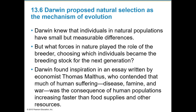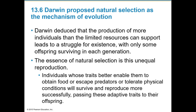Darwin found help in an essay by economist Thomas Malthus, who argued that much human suffering from disease, famine, and war was a consequence of human populations increasing faster than food supply and other resources. Darwin deduced that the production of more individuals than limited resources can support leads to a struggle for existence, with only some offspring surviving each generation. The essence of natural selection is this unequal reproduction — individuals whose traits better enable them to escape predators, obtain food, or tolerate physical conditions will survive and reproduce more successfully, passing adaptive traits to offspring.